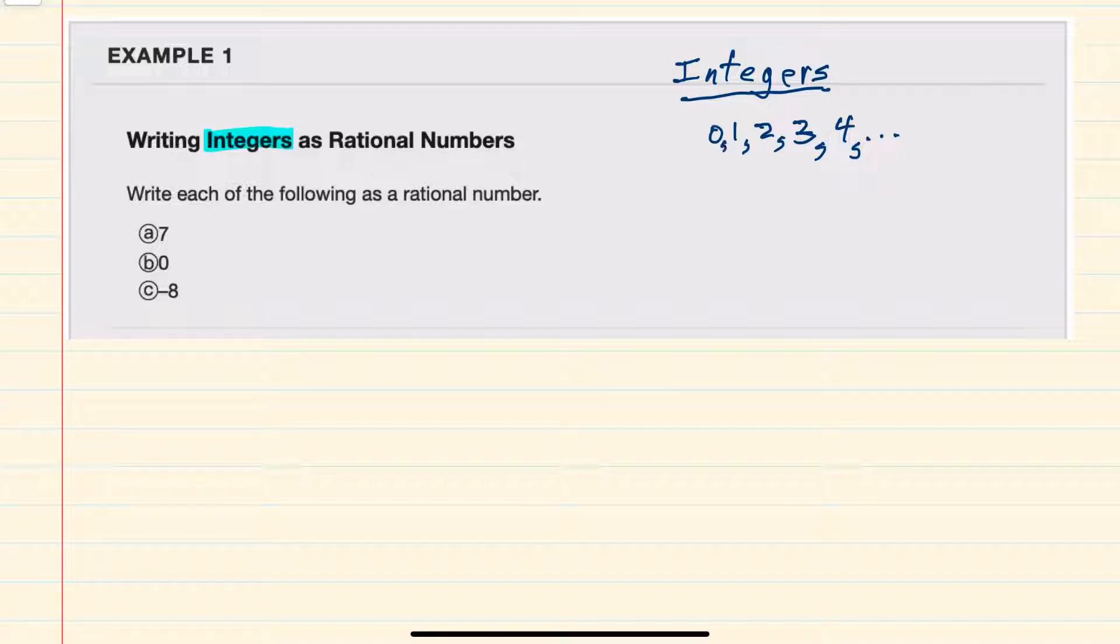If we include 0, we would have the list of all the whole numbers.